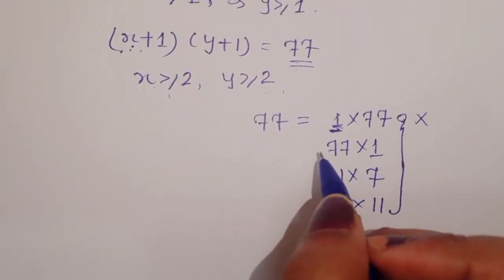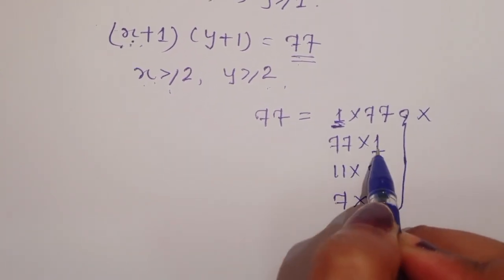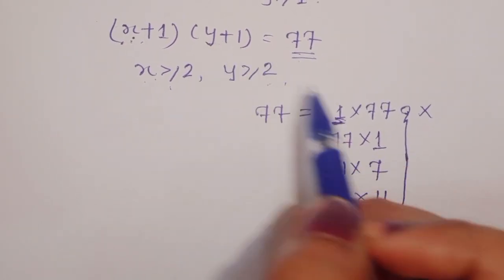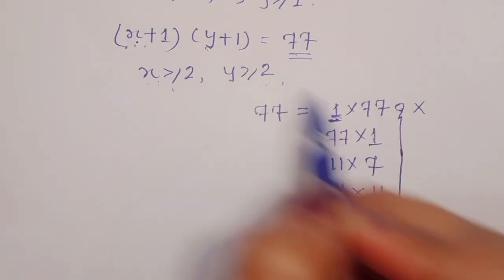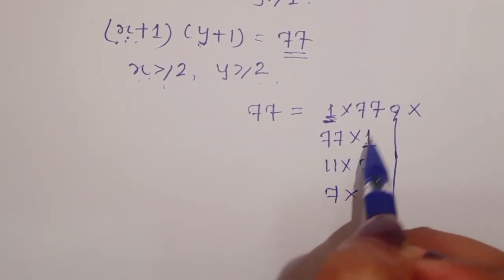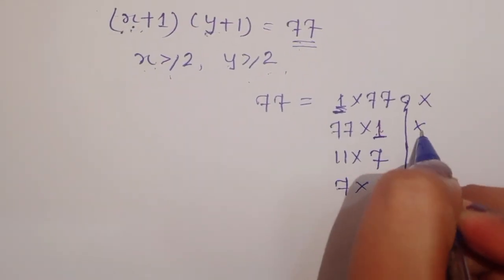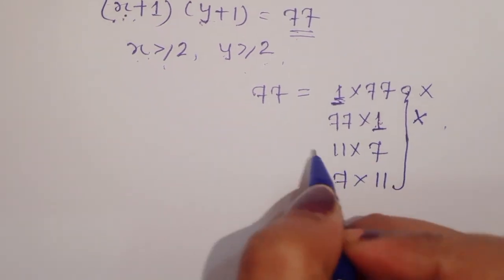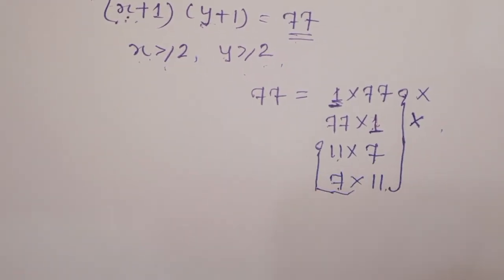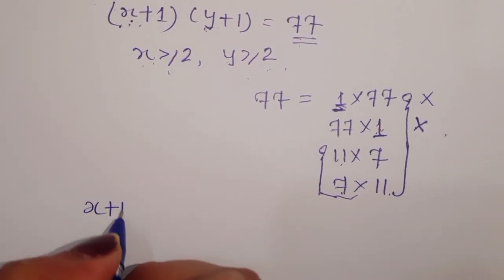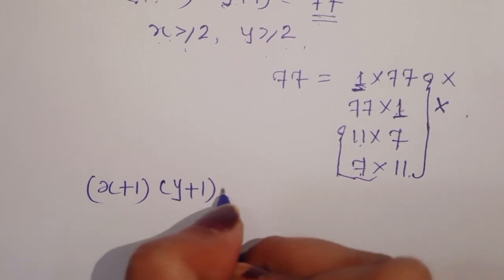In the next case, taking 77 times 1, y plus 1 equals 1, so y equals 0. But y must be greater than or equal to 1, so this is also not possible. We are left with two valid conditions: 11 times 7 and 7 times 11.